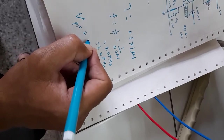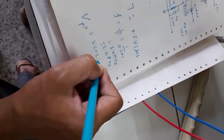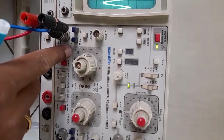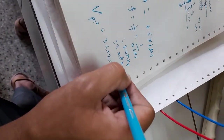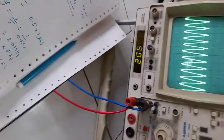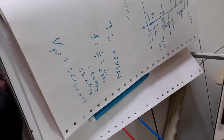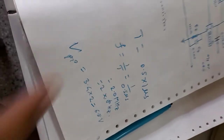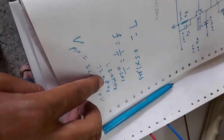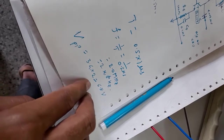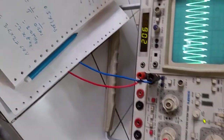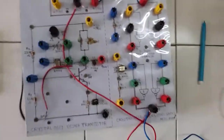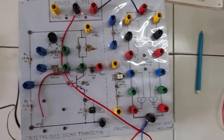V_pp equals 3.4 times 2 volts, so the total V_pp is 6.8 volts. This is the corresponding frequency and amplitude result. The frequency of oscillation of the crystal oscillator is 2 MHz, and the oscillation peak-to-peak amplitude is 6.8 volts. This is what we are expecting from this experiment.